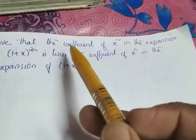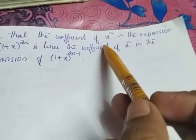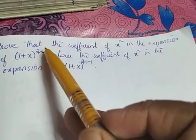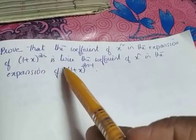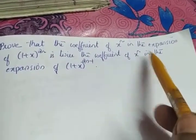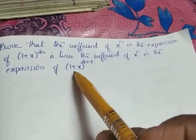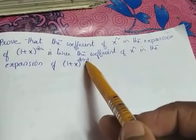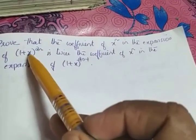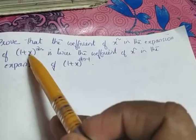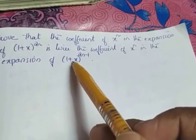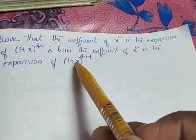The next question: prove that the coefficient of x raised to n in the expansion of (1 + x) raised to 2n is twice the coefficient of x raised to n in the expansion of (1 + x) raised to 2n minus 1. We have to prove the coefficient of this term is twice the coefficient of x raised to n in the expansion of the other one.